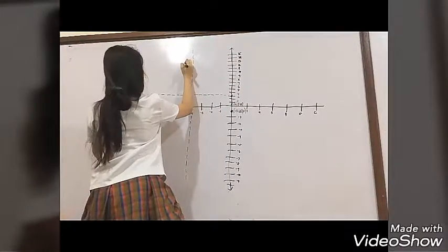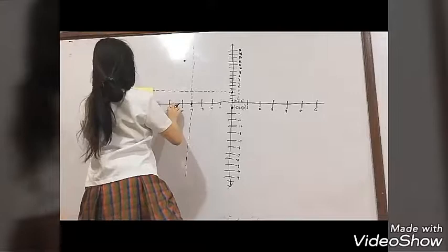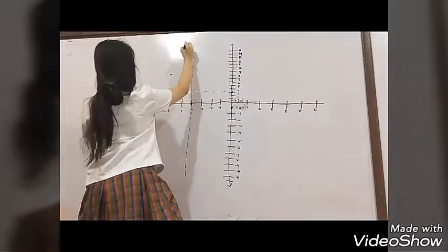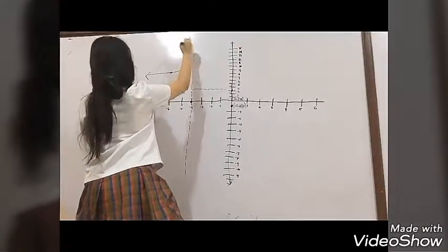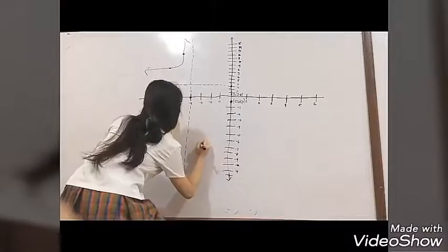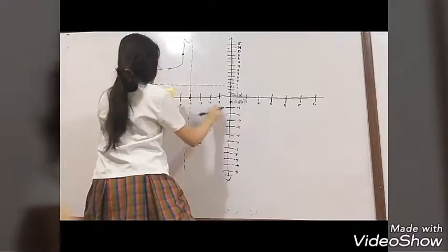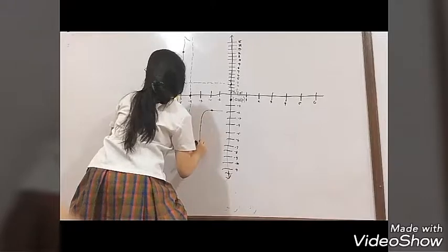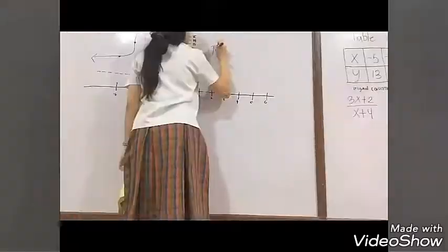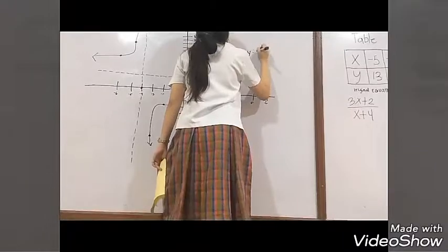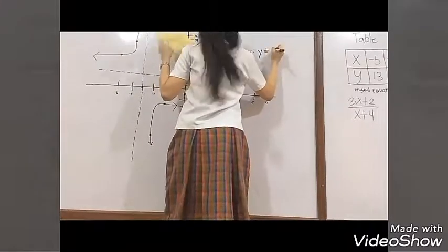Now we will plot the coordinates: negative 5 and 13, negative 6 and 8, negative 3 and negative 7, and negative 2 and negative 2. Then we connect the two points on both sides of the vertical asymptote. The points are plotted on opposite sides of each other — that's how it should be. The range is all real numbers except the value of the horizontal asymptote, which is 3. So the range of this function is all real numbers except 3. Thank you for watching.